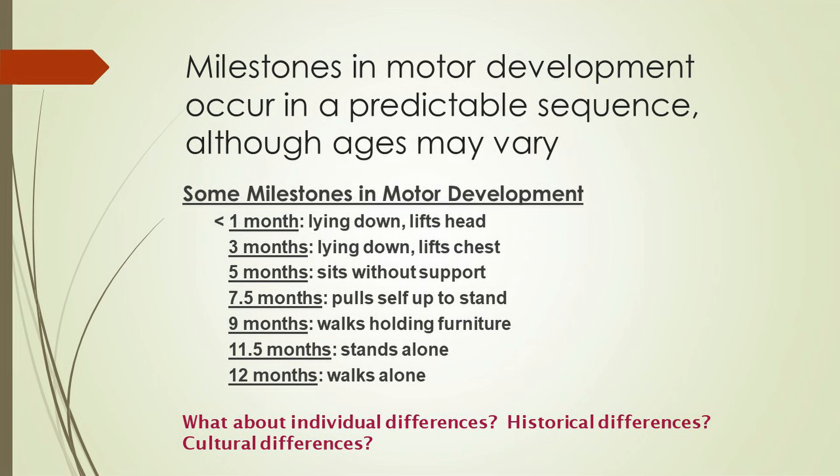Most children will pass through these milestones in a sequential, predictable fashion. Sometimes parents become concerned if they believe their child is not hitting these milestones right on time. But we know there are individual differences in when these various milestones are achieved — for instance, infants in the United States today tend to walk at some point between 11 months and 14 months of age, with 12 months really just being an average.